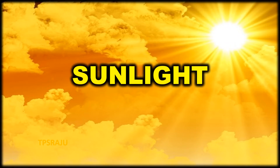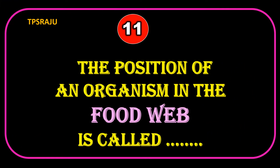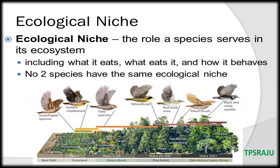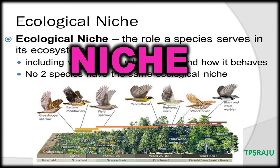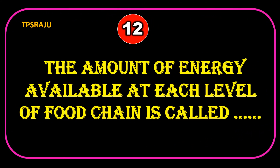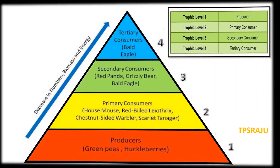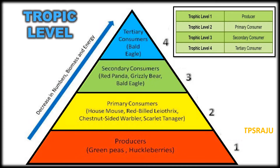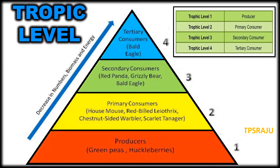What is the main source of energy? Sunlight. The position of an organism in the food web is called niche. The amount of energy available at each level of the food chain is called trophic level.